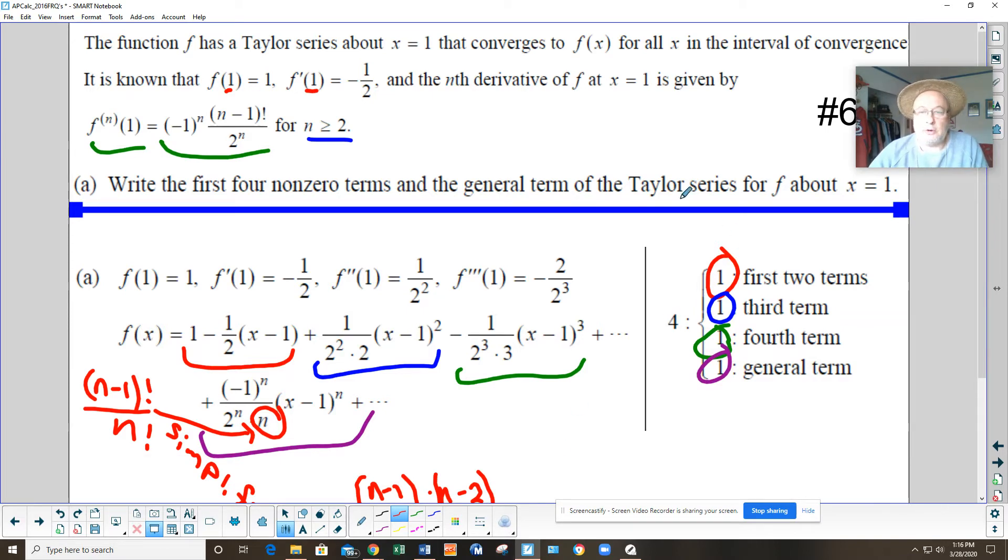Your first two terms of the Taylor series are F of 1, given, plus F prime of 1. But it's centered at x equals 1, so it's not times x, it's times x minus 1. Over 1 factorial, 1 factorial is irrelevant. So negative 1 half is your F prime of 1, so that's why that gets substituted right in there.